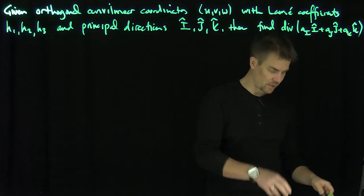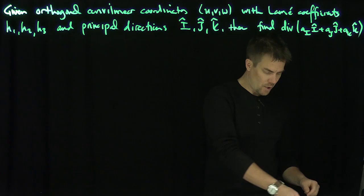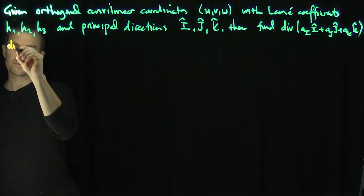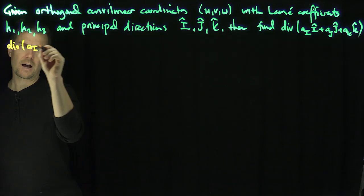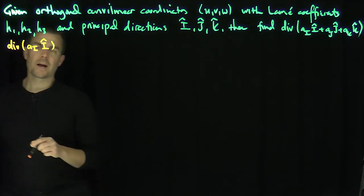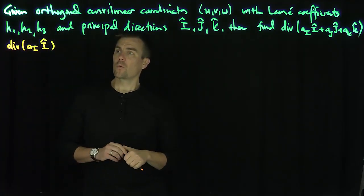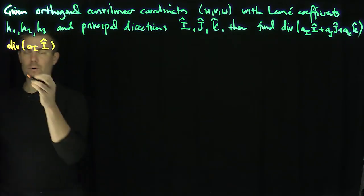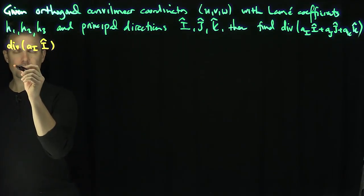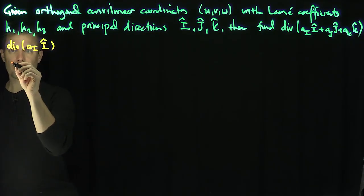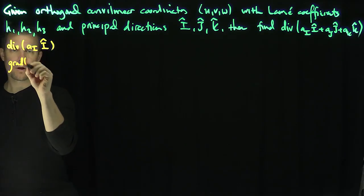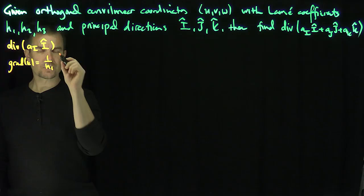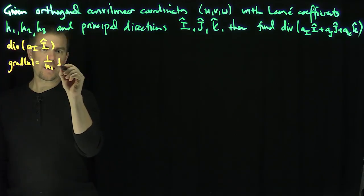Since divergence is linear, we can focus on computing the divergence of a_i î. We know that the gradient of u is really 1 over h1, times î.